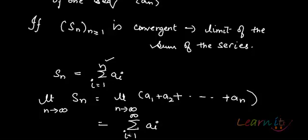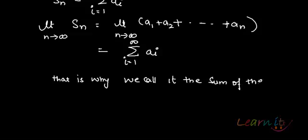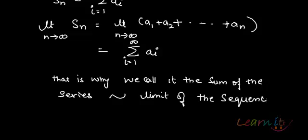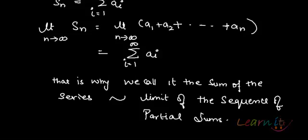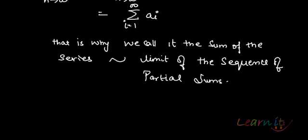It is the sum which goes from 1 to infinity, and that is why we call it the sum of the series. The sum of the series is essentially the limit of the sequence of partial sums. This is essentially a sequence of partial sums, and the limit of that is the sum of the series. A series is derived from a sequence and hence it becomes the sequence of partial sums.